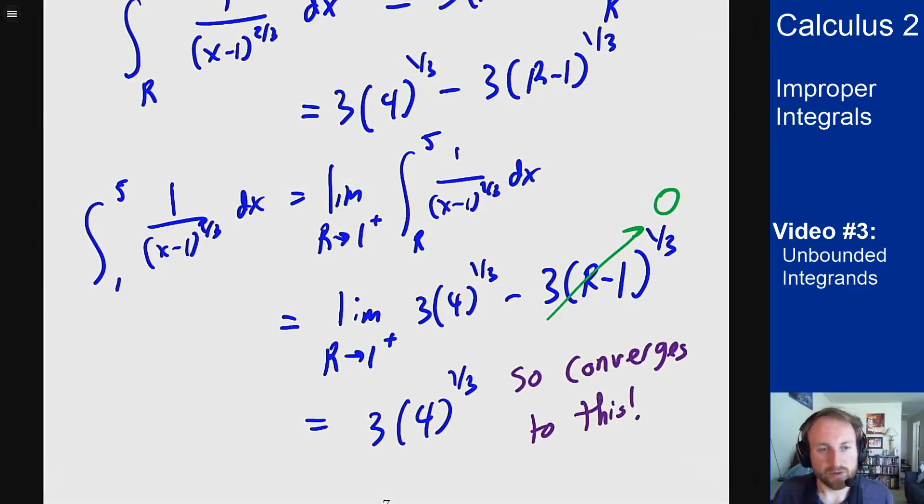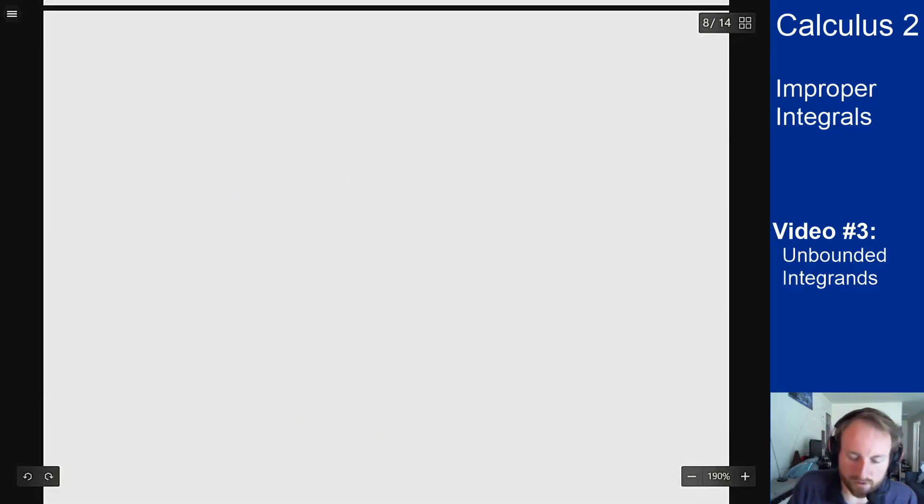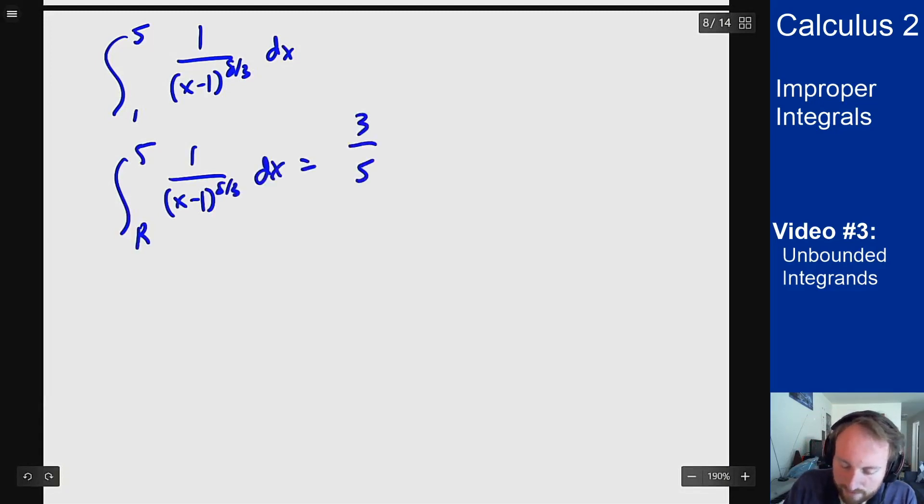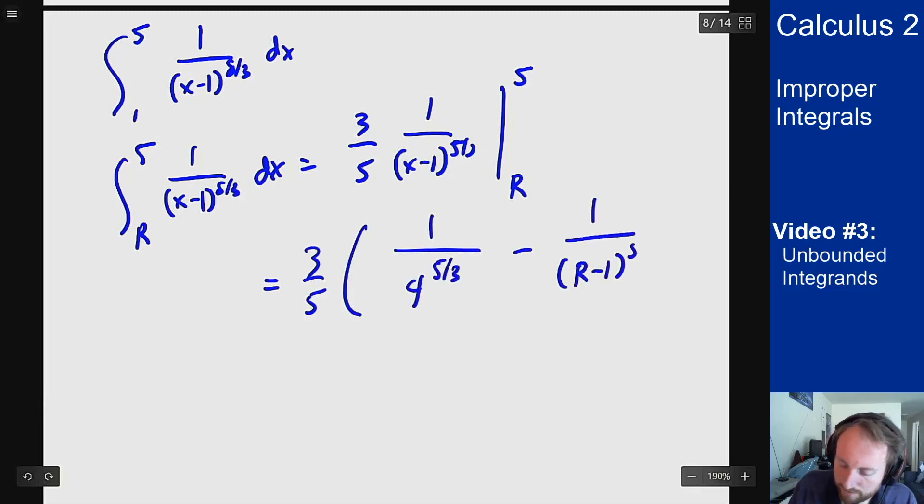Now let's check out the second one and see what that gives us. The second one was the integral from 1 to 5 of 1/(x-1)^(8/3) dx. This process is going to be the same: replace the 1 by an r and take a limit. The integral from r to 5 of 1/(x-1)^(8/3), I can integrate this. I get 3/5 · 1/(x-1)^(5/3). Plugging in r and 5, I get 3/5 times 1/4^(5/3) minus 1/(r-1)^(5/3).